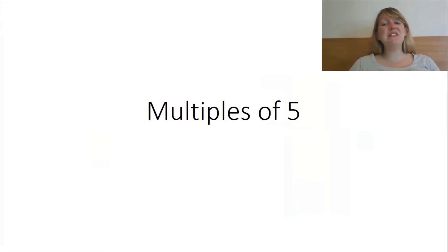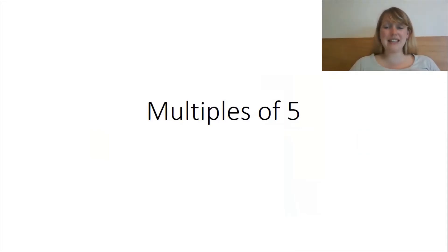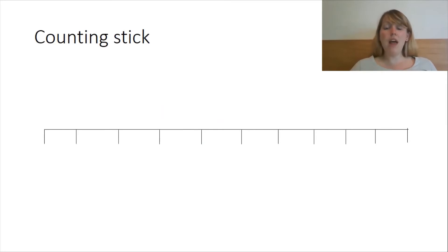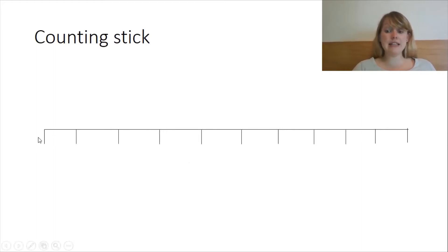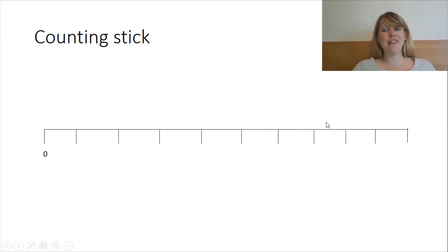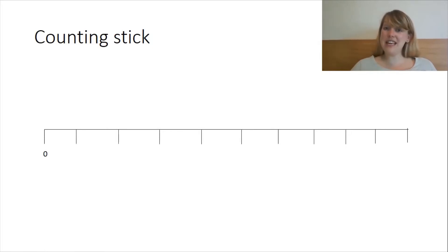Now are you ready for the really tricky bit? We're going to learn your multiples of 5 off by heart using a counting stick. Let's have a look at our counting stick. So when we look at multiples of 5, on this end, 0 times 5 we get — yes that's right — 0. And we've got 10 spaces on our counting stick, so 10 lots of 5 is — that's right — 50.